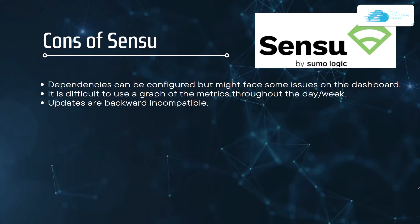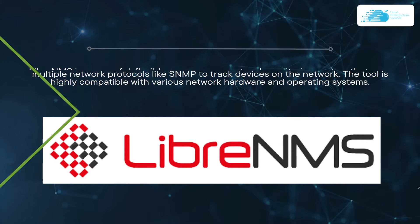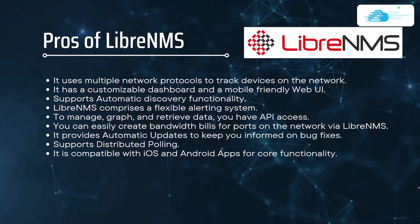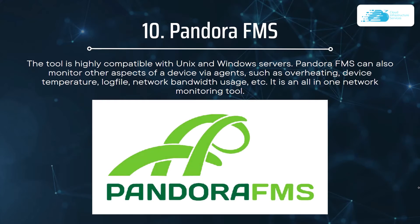Number nine on our list is LibreNMS. LibreNMS is a flexible open source network monitoring system that uses multiple network protocols like SNMP to track devices on the network. It is highly compatible with various network hardware and operating systems. The pros include use of multiple network protocols, a customizable dashboard and mobile-friendly web UI, support for automatic discovery functionality, and a flexible alerting system. A con is that it is easy to accumulate data without adapting to newer technologies, but it supports service-oriented monitoring which helps reduce downtime.